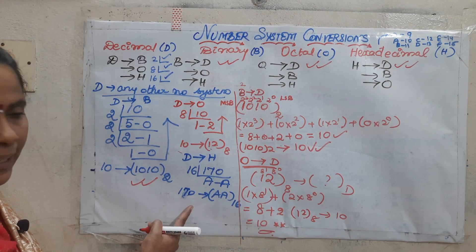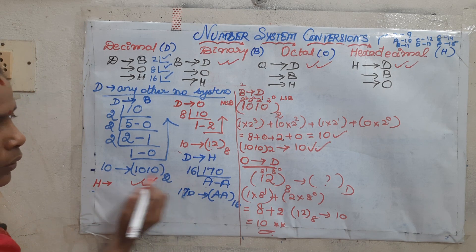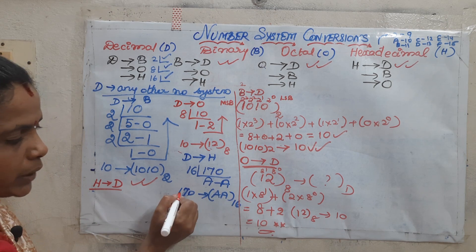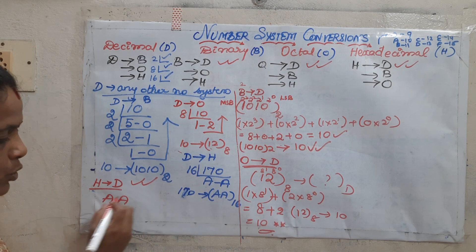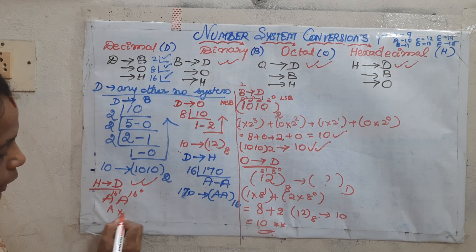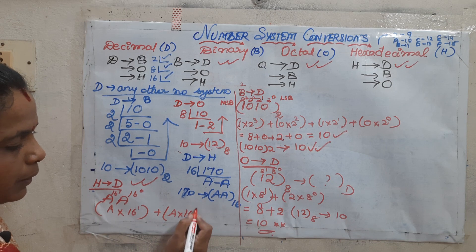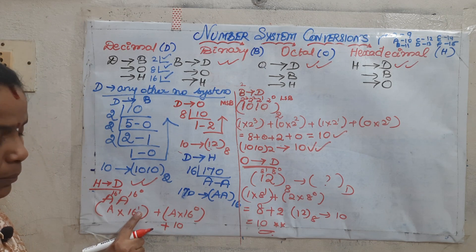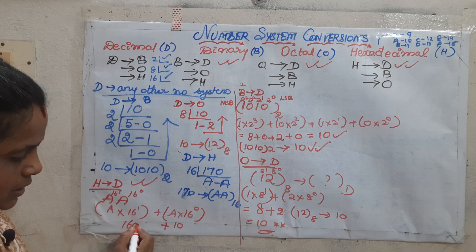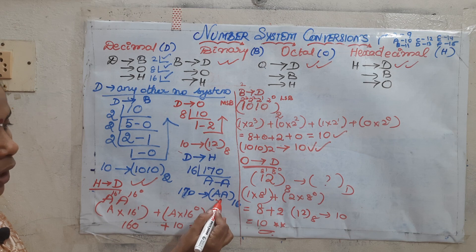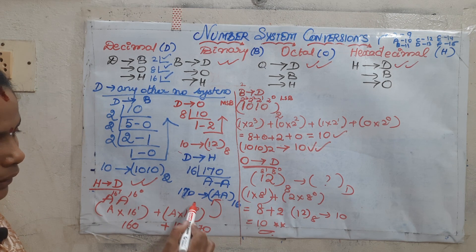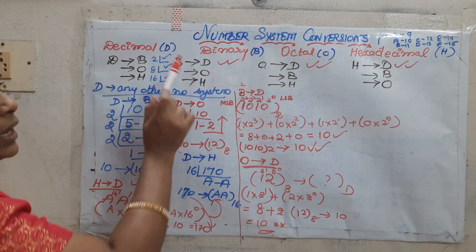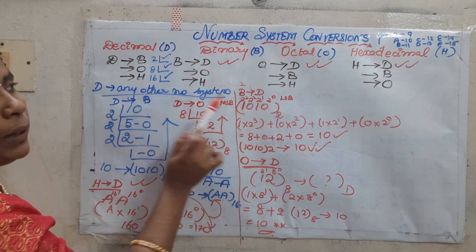Extending to hexadecimal to decimal: the number taken was 170 and it was converted to AA. Now converting AA back: A×16¹ + A×16⁰. A represents 10, and 16 power 0 is 1, so 10×16 + 10×1 = 160 + 10 = 170. This verifies the answer. The logic is: decimal to any other system — divide by its radix; any other system to decimal — multiply by its powers.